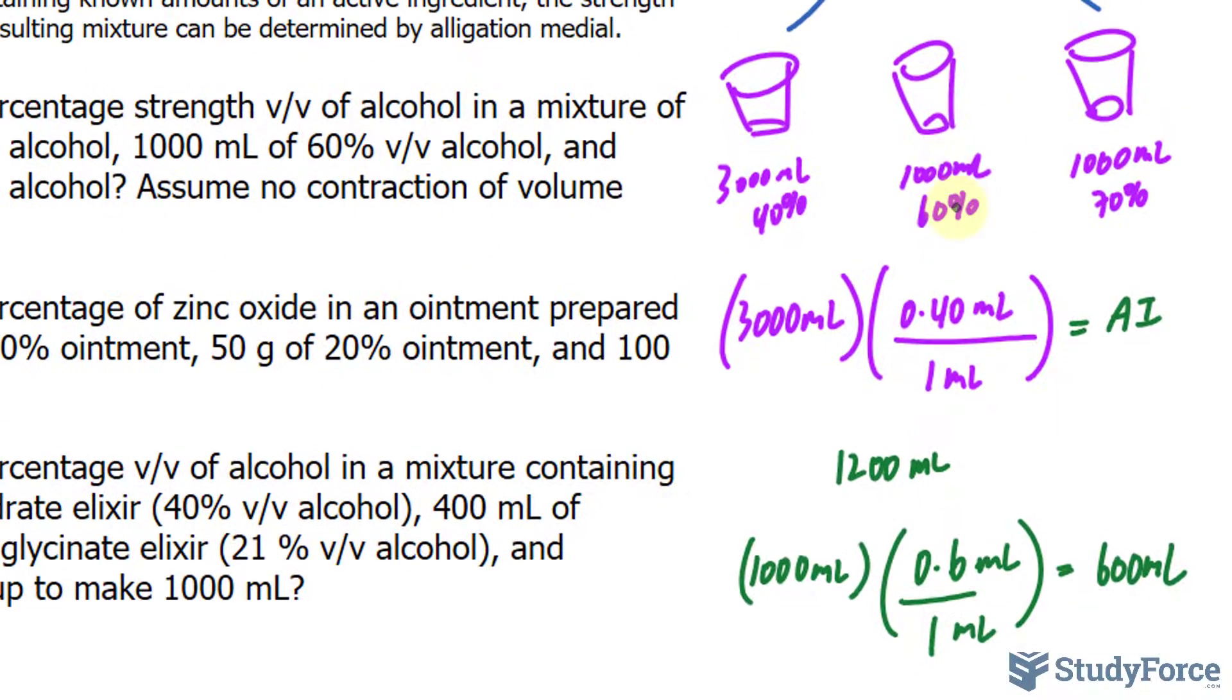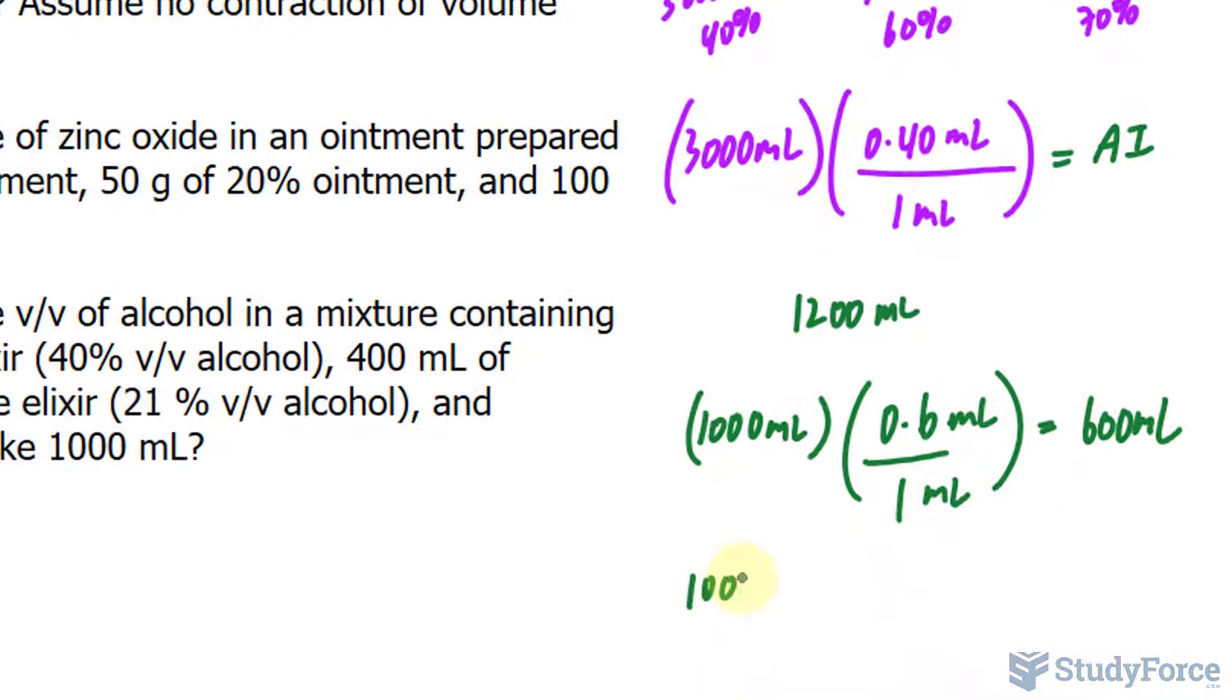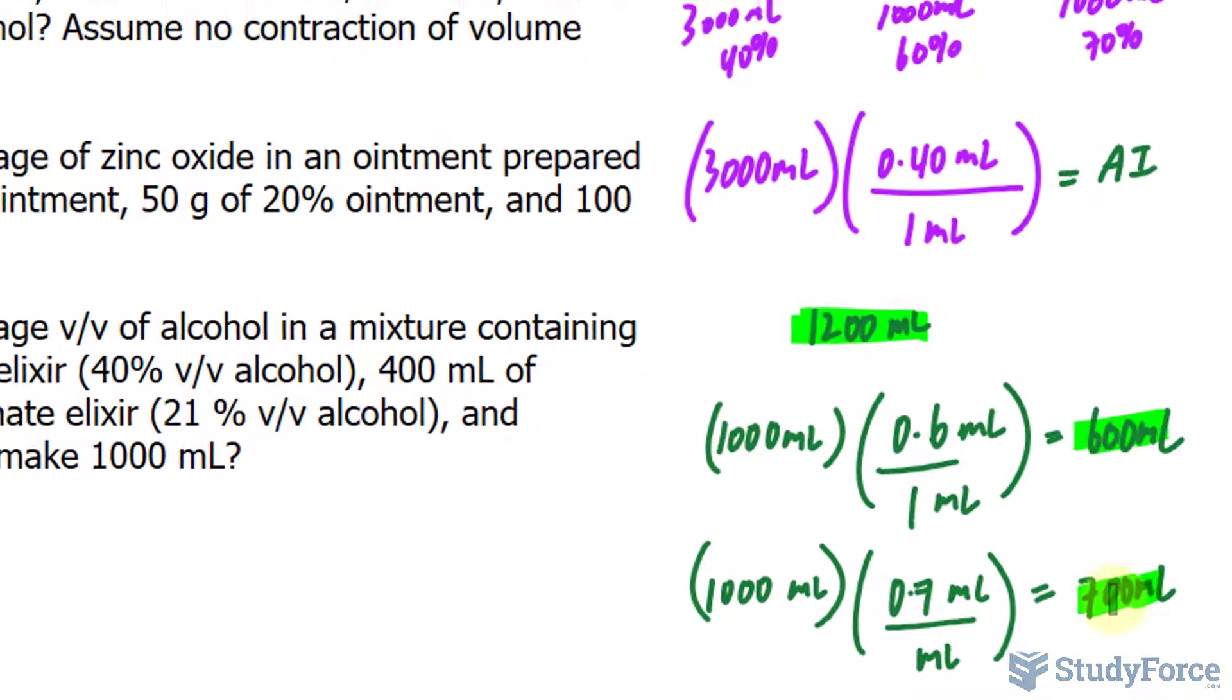And lastly, for this one, we take 1000 and multiply it by 0.7 milliliters per milliliter, and that equates to 700 milliliters. So as I mentioned, we will be adding this value, that value, and that value together.